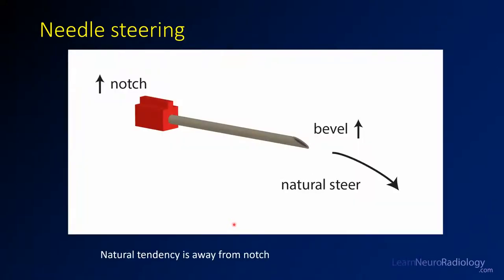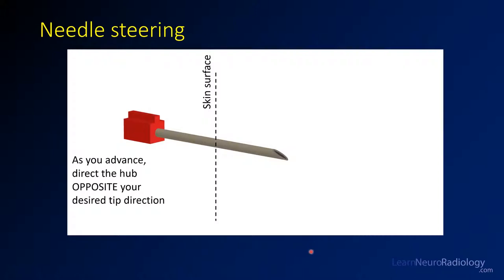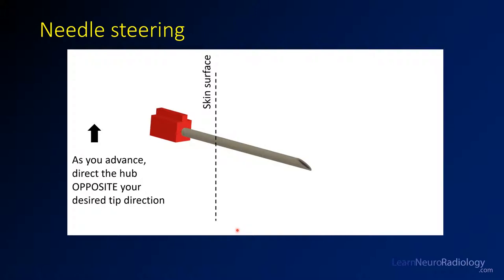Quincke needles have a bevel and the hubs have a notch typically on the same side as the bevel. These needles have a natural tendency to steer away from the notch, so if you advance without pressure in one direction it will naturally cut into tissue and steer away from the notch. You can take advantage of this: to steer the needle tip downward, apply gentle upward pressure on the hub and let the natural steering carry the tip down. To go the other direction, rotate the needle 180 degrees, apply pressure the other way, and use the natural steering.